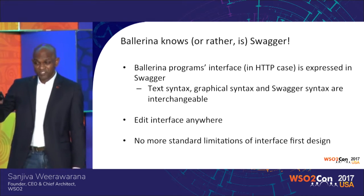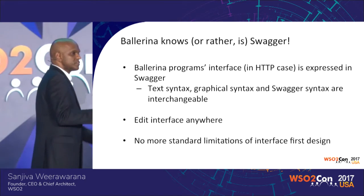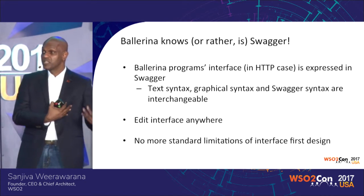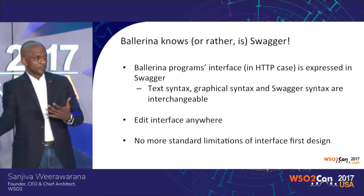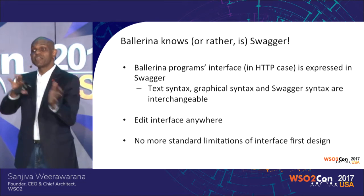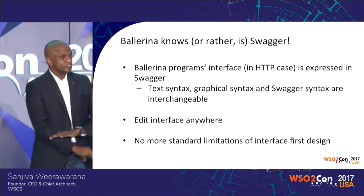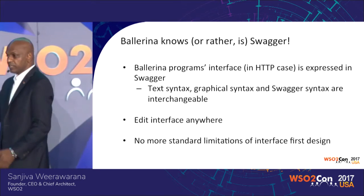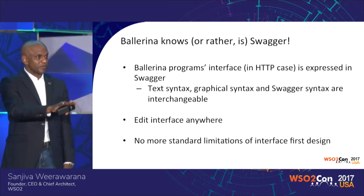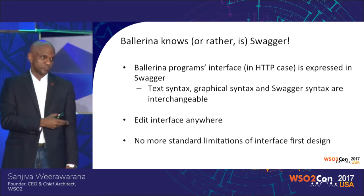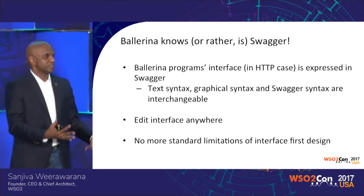Ballerina also knows Swagger — actually, it is Swagger. When you write a Ballerina service and bind it to HTTP, the interface of the service has a representation which is in Swagger. It's not that you generate a Swagger from a Ballerina service; you take the Ballerina service and look at it as Swagger. The implementation details are not visible — only the interface — and it shows the interface. So if you edit the interface in Swagger and switch back to the Ballerina source code view, a resource may have been added or removed. It's a model where it deeply understands Swagger as a way of representing HTTP endpoints.